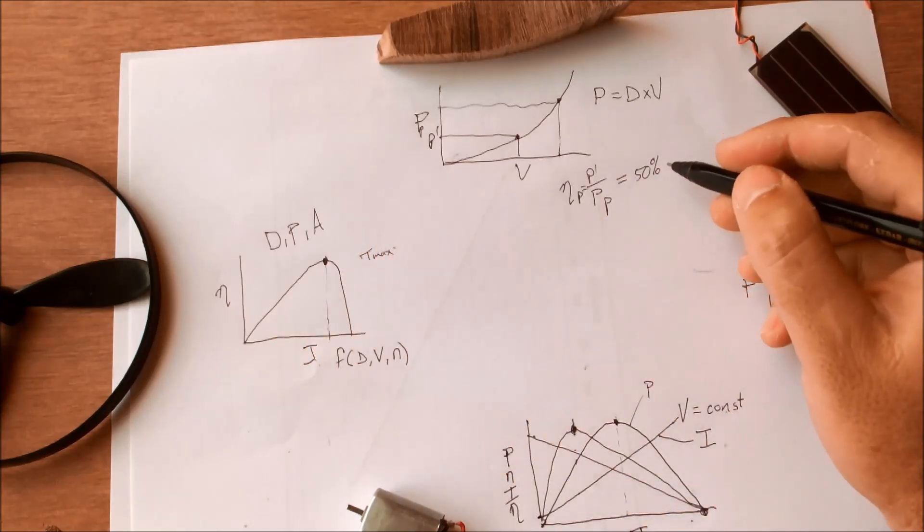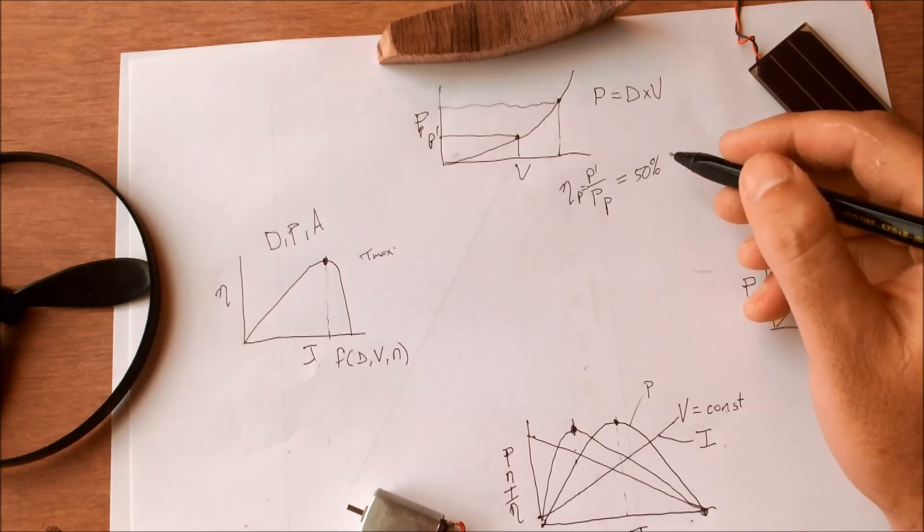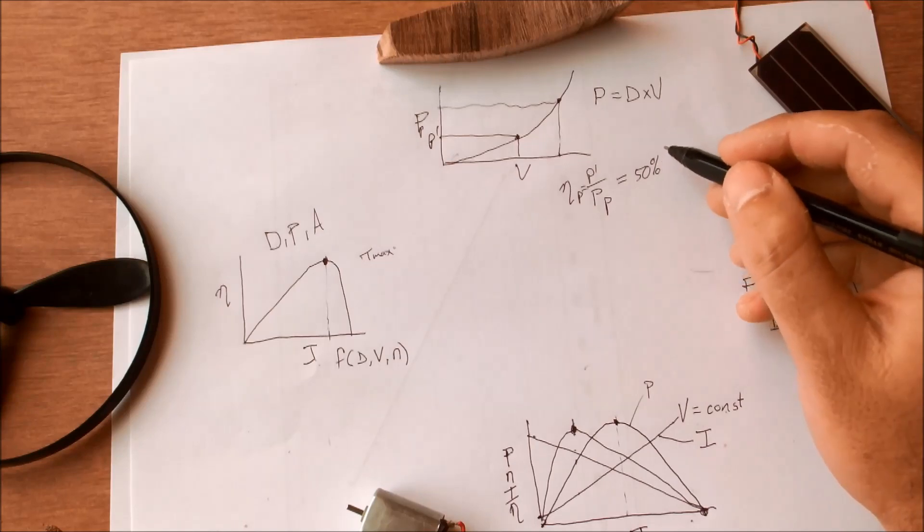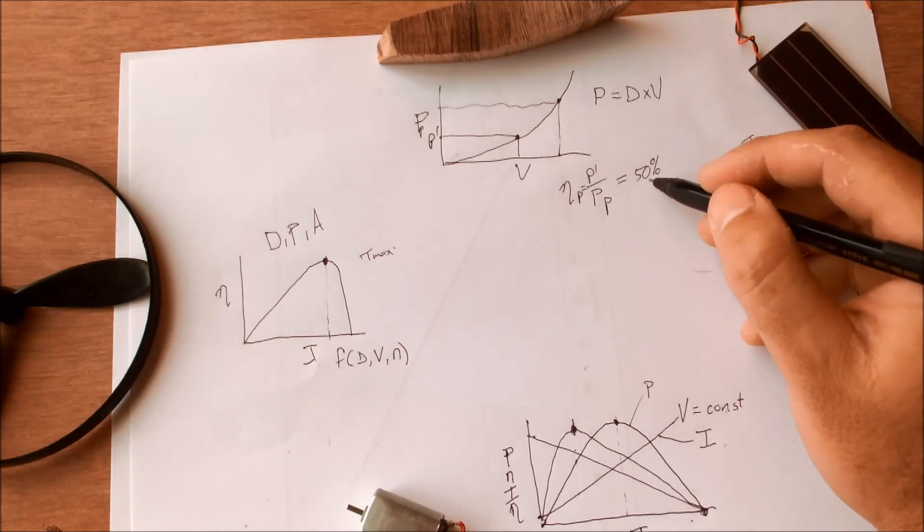If you really know what you're doing and you've really optimized everything you can push that up to 55 maybe but 60% is really not very realistic and if you want to be conservative rather aim for 45 or thereabouts.